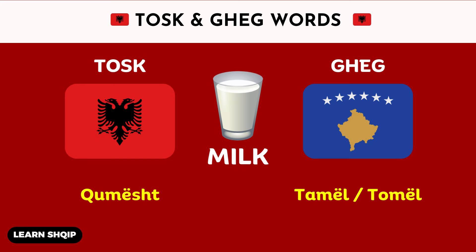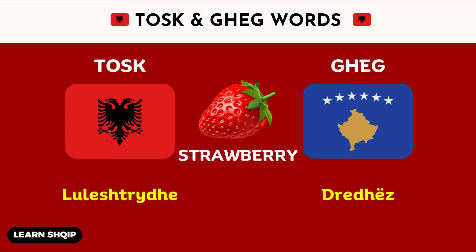Let's see the next word: strawberry. For strawberry, in the Tosk dialect, you will say Lule Shtrydhe. And then in Geg, you will say Drevës.